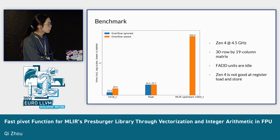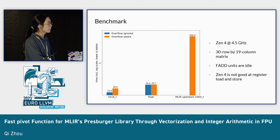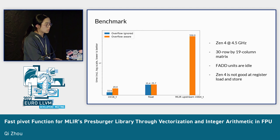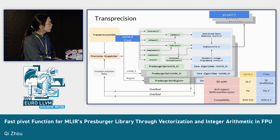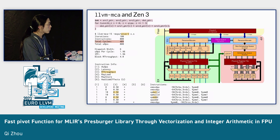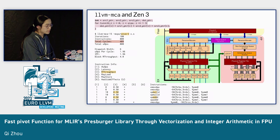The reason is that as we are doing two multiplies and one add, the architecture provides two FMA units and two FADD units — the FADD units are left idle and only FMA units are used in floating point operations. Another potential reason is that Zen 4 is not good at register load and store. The previous LLVM MCA report indicated that the throughput of writing back from register to cache is one cycle per register, which magnifies the disadvantage of floating point.